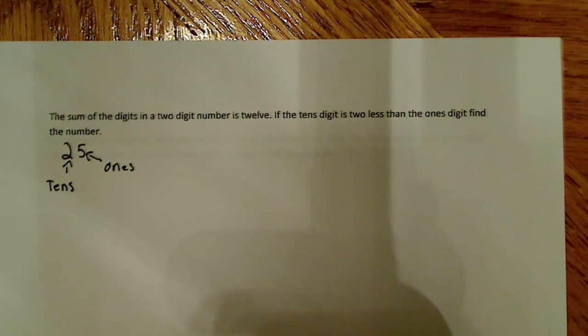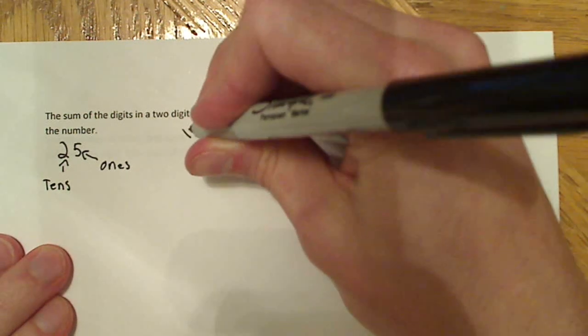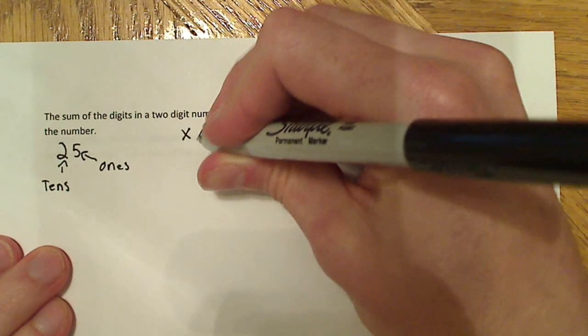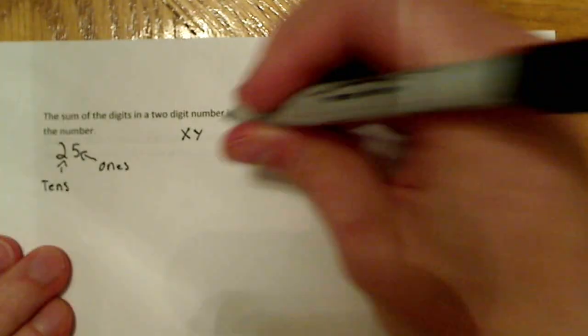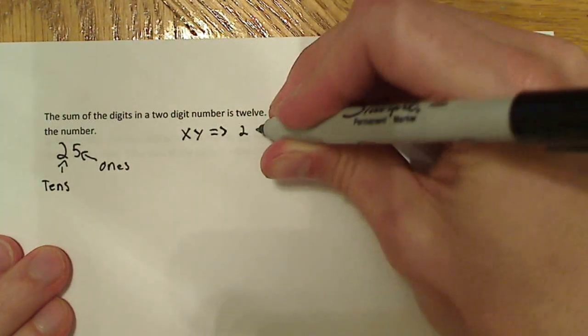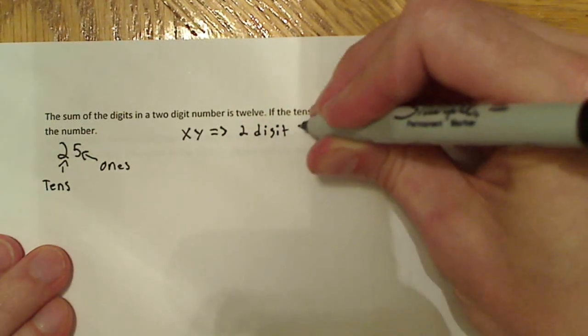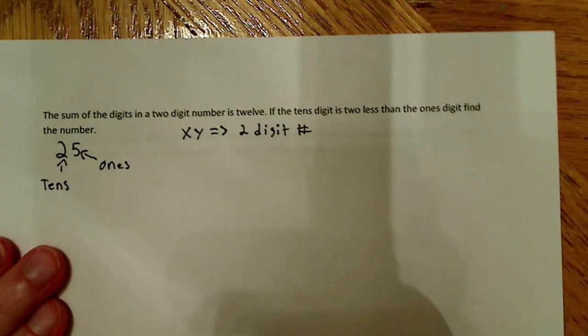So the problem says, the sum of the digits in a two digit number. So let's just define those digits first. So I'm going to define x as the tens digit, and y as the ones digit. And I'm going to say that that goes over to my two digit number. So that's my two digit number.